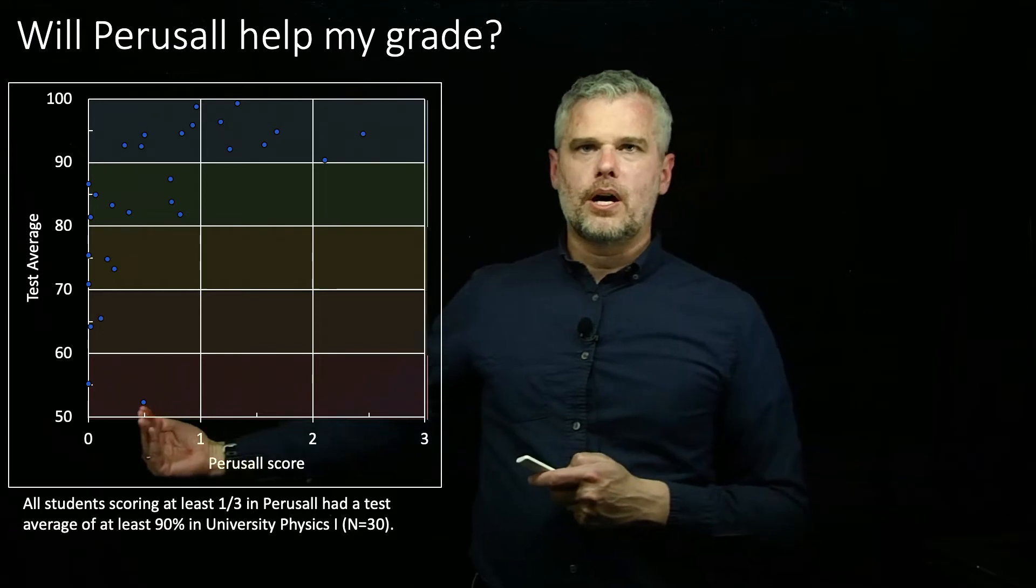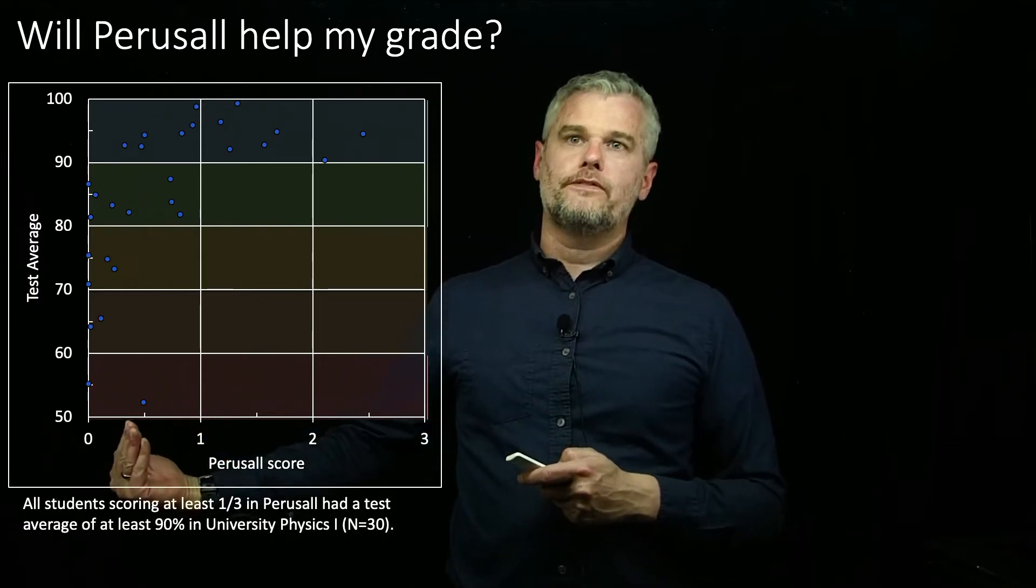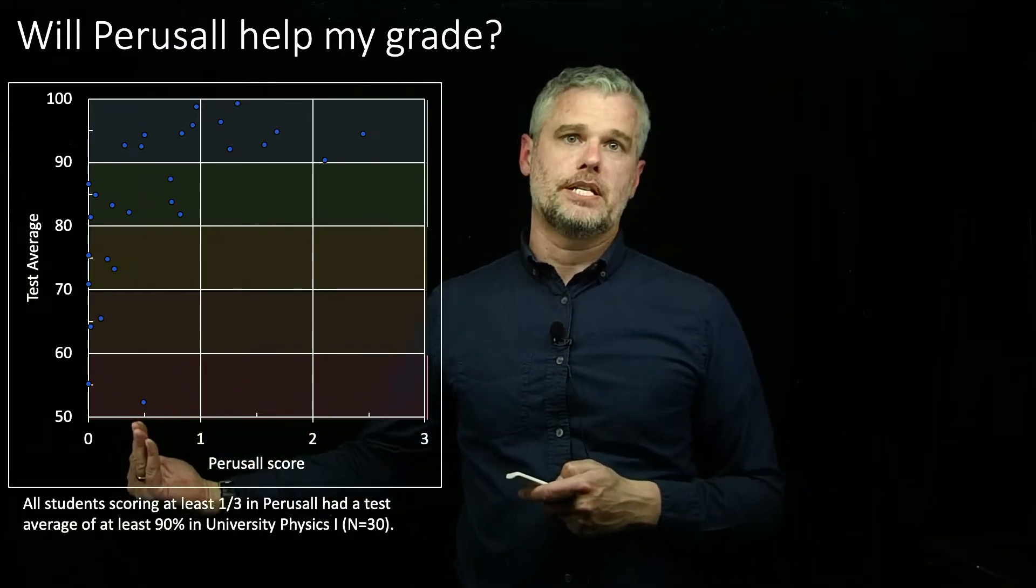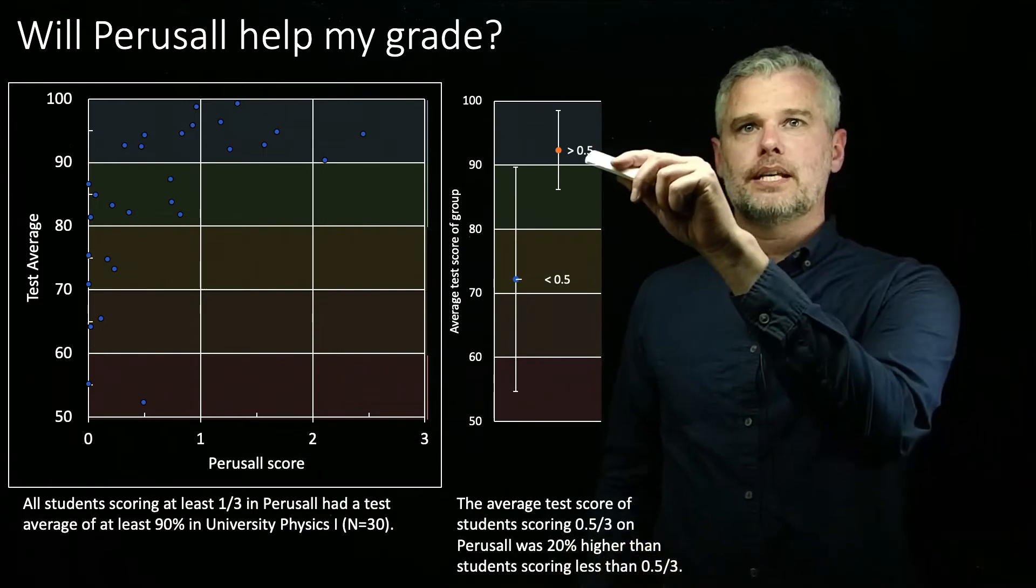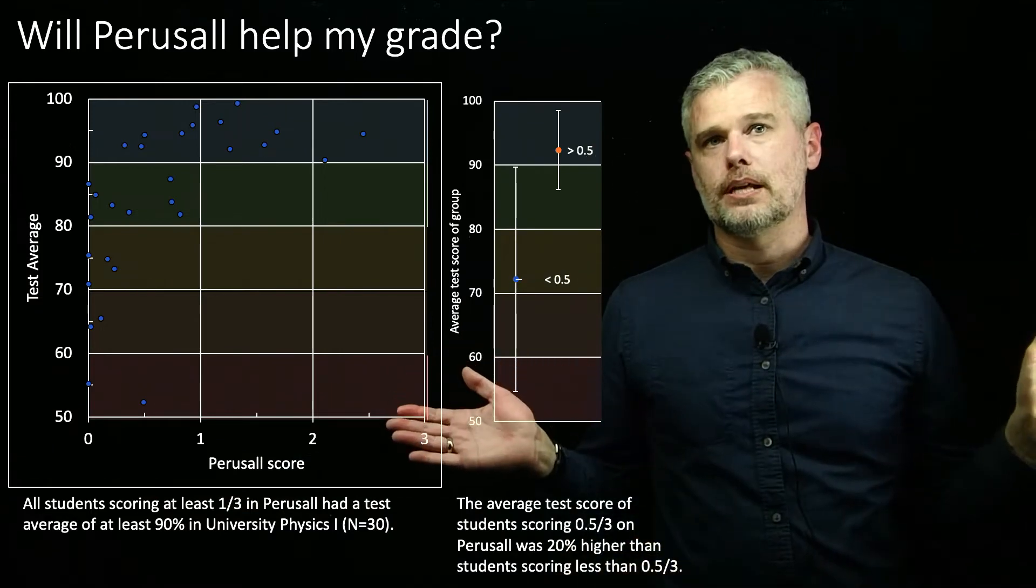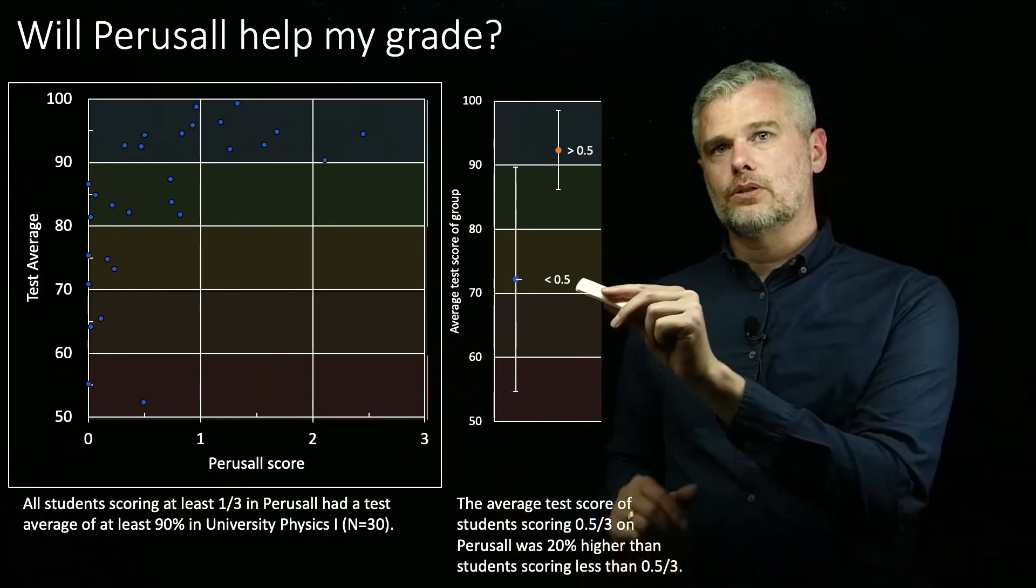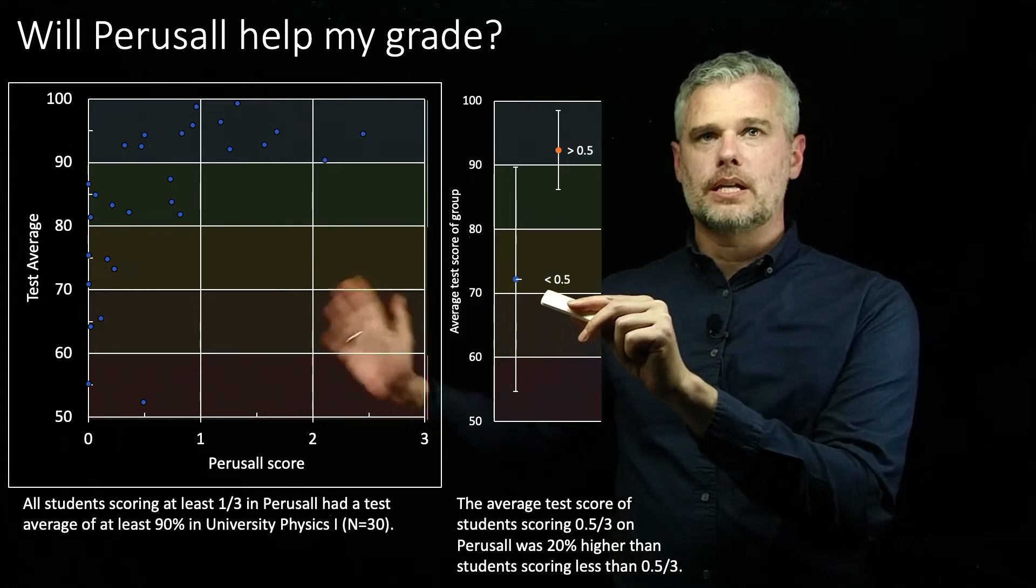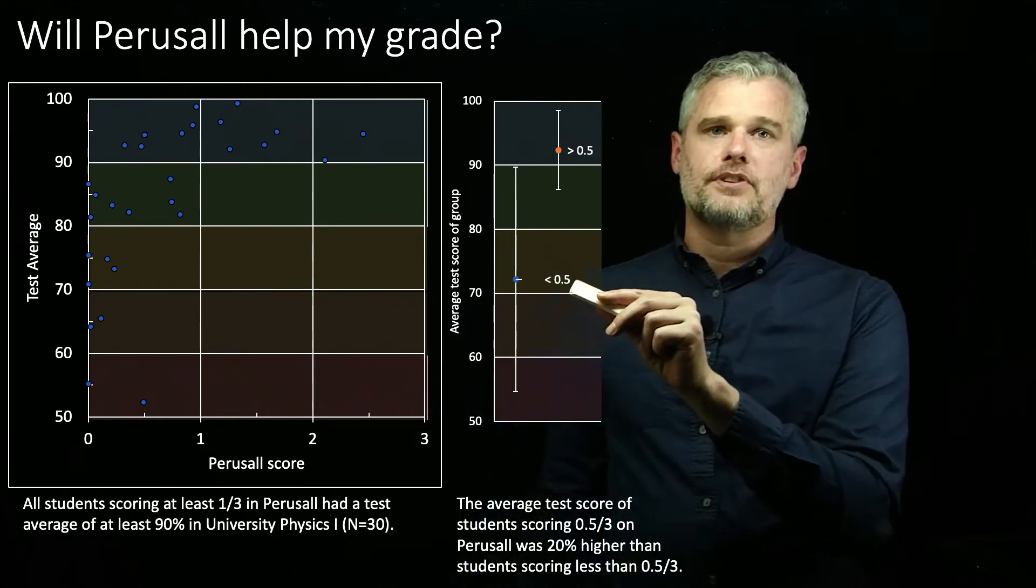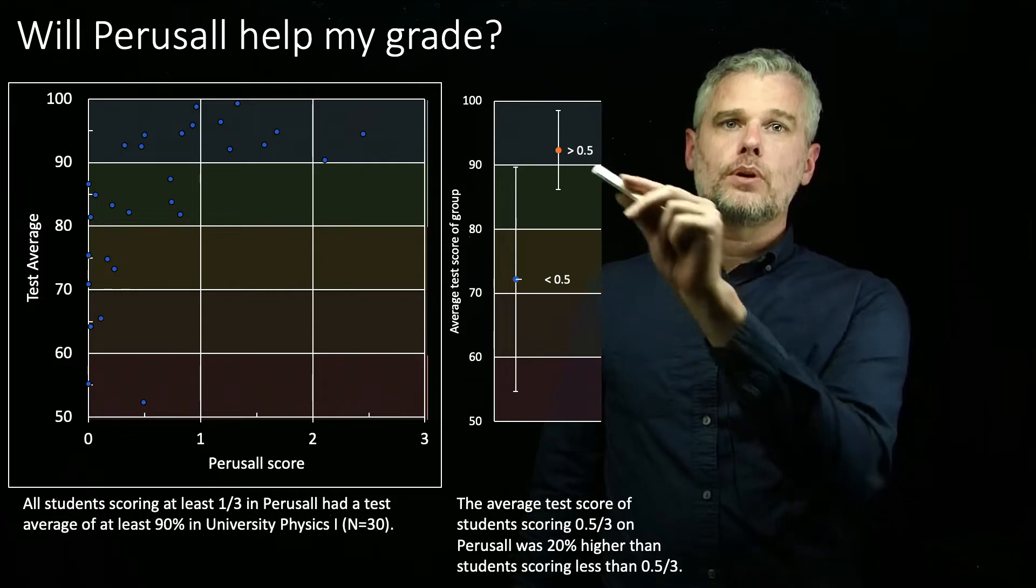Let's lower the bar a little more. Students scoring 0.5 or greater, minimal participation in Perusall. When I look at their test average, it's 92%. Compared to students scoring 0.5 or less, in other words, not really using Perusall, their test average is 72%. That's a 20 percentage difference.